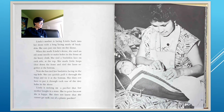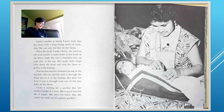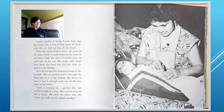Linda's mother is lacing Linda back into her skein with a long lacing made of buckskin. She uses just one lace. When she made Linda's skein, she used an old stone needle to make holes in the heavy cloth. She tied a buckskin lace on each side at the top, made little hoops down the front, and tied the laces at the bottom. Now she can quickly pull the lacing through the loops and tie it at the bottom without putting it through each tiny hole.